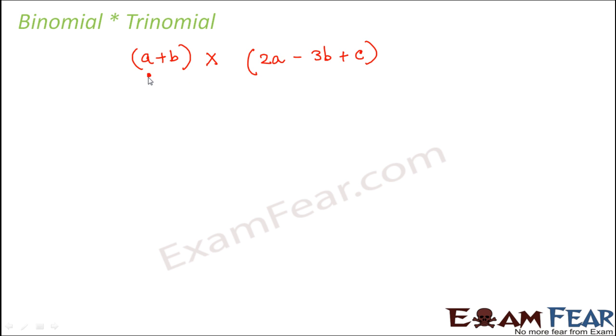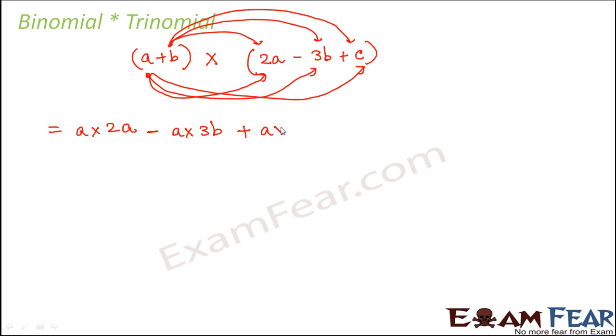Here also the same thing: each term in this expression should get multiplied to each term of the trinomial. So a should get multiplied to all three terms. Similarly b should get multiplied to all three terms. Therefore we can write it as a × 2a minus a × 3b plus a × c plus b × 2a minus b × 3b plus b × c. This can be written as 2a² - 3ab + ac + 2ab - 3b² + bc.